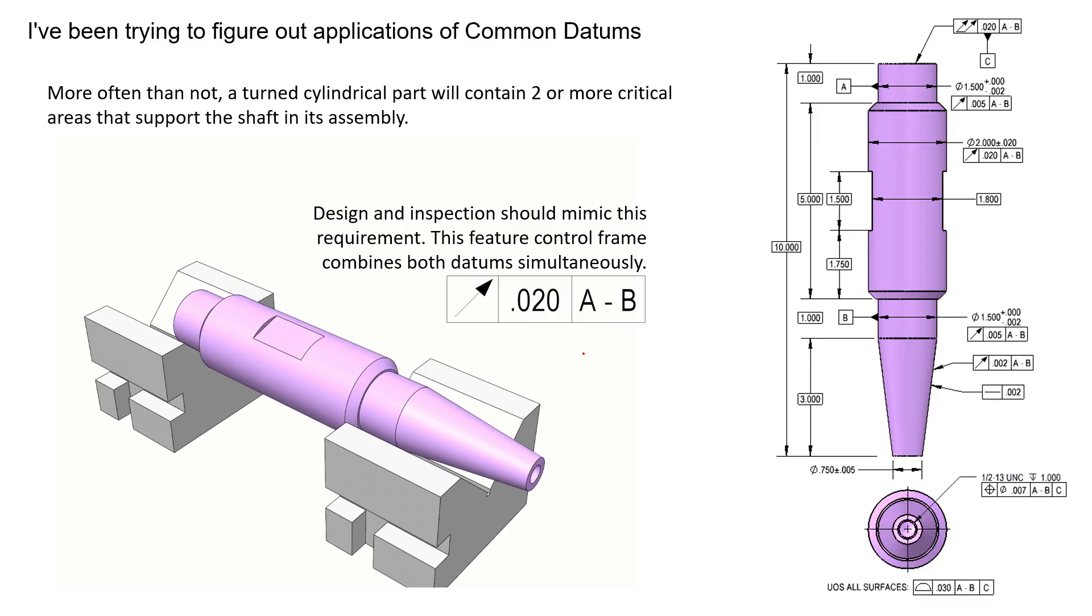We can see that we have applied runout, circular runout, to a lot of the features on this part with respect to datum axis A-B. Now that's not with respect to datum axis A and then datum axis B. It's a completely separate axis. In fact, datum axis A might be this axis right here if this feature over here tips off to the right. And datum axis B might look like this and it might tip a different direction.